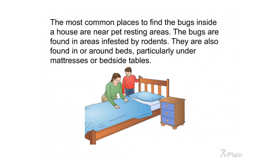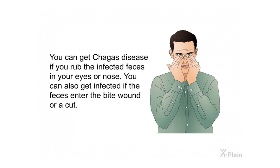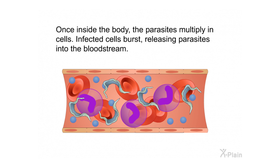The bugs are found in areas infested by rodents. They are also found in or around beds, particularly under mattresses or bedside tables. A bug that is infected with Chagas disease will usually bite your lips or your face. It leaves behind feces that are infected with a parasite called T. cruzi. You can get Chagas disease if you rub the infected feces in your eyes or nose, or if the feces enter the bite wound or a cut.